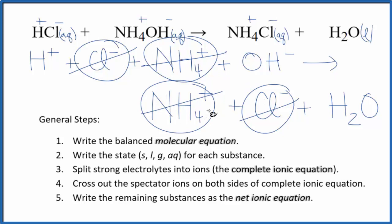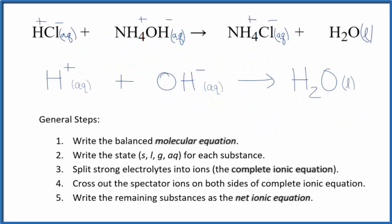Let me clean this up, write the states in, and we'll have our net ionic equation. And this is the net ionic equation for HCl plus NH4OH, hydrochloric acid and ammonium hydroxide. You'll note that charge is conserved, we have